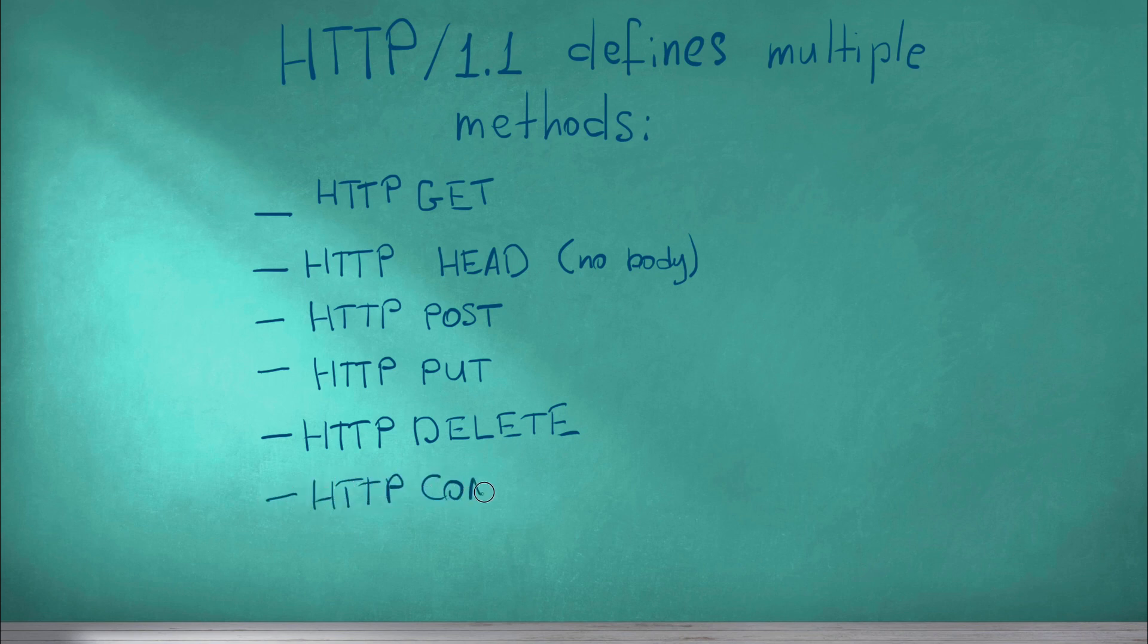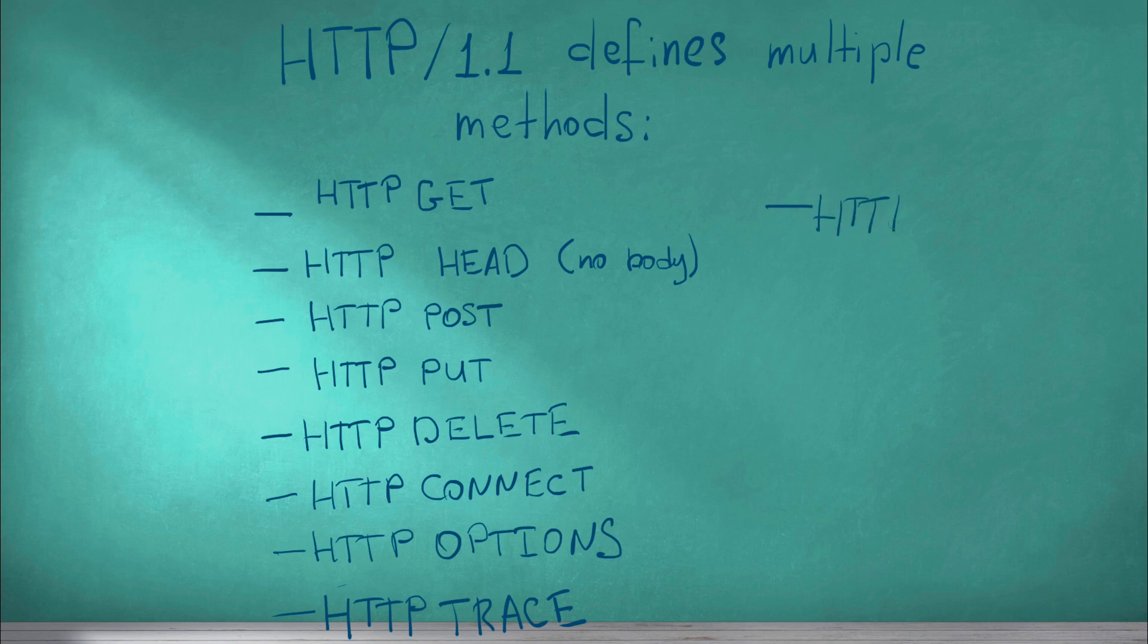The CONNECT method establishes a two-way connection with the requested resource. It can be used to open a tunnel. The OPTIONS method requests available communication options for a given URI. The TRACE method performs a message loopback test along the path to the requested resource and acts as a debugging mechanism. And the last method is PATCH. It is a kind of update that applies a partial modification to the requested resource.